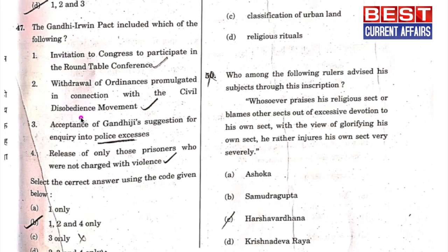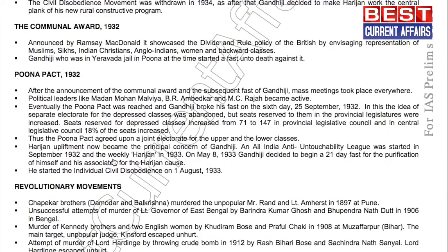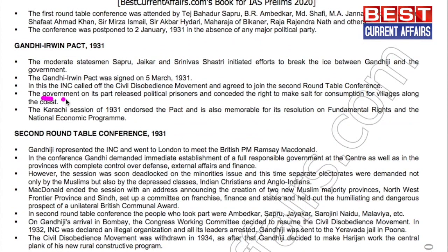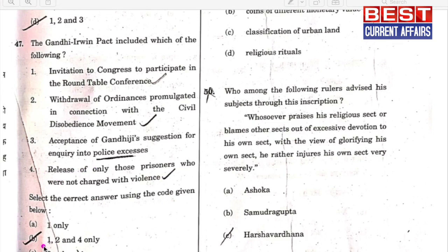Statement one is correct, leaving only two options. Checking statement four — release of prisoners who are not charged with violence: from the same page on the Gandhi-Irwin Pact, the government agreed to release political prisoners. Statement four is also correct. The option containing one, four, and two — therefore B is the answer.